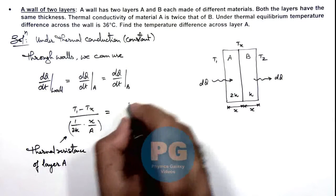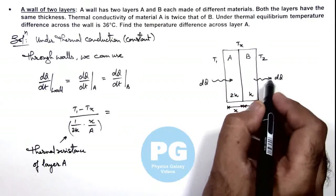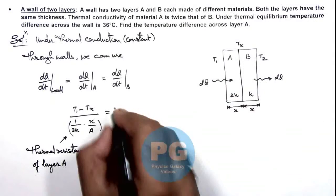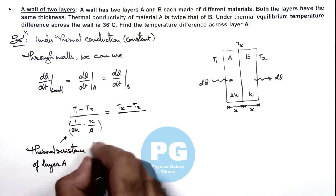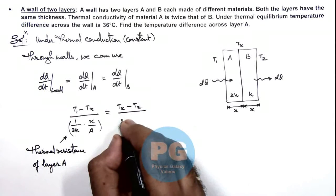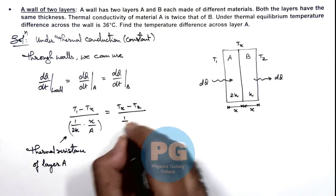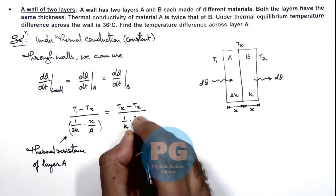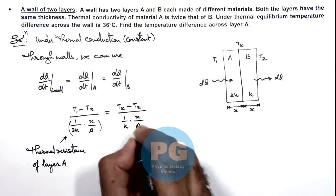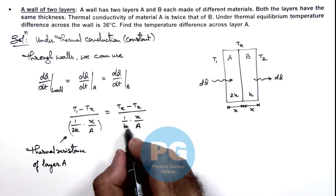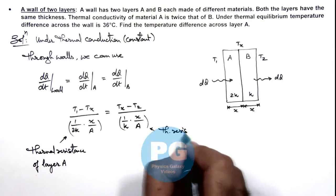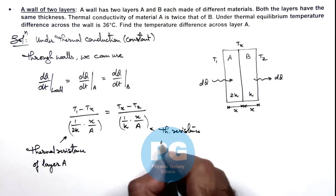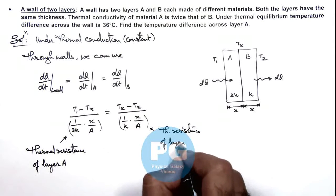Similarly, we can write the amount of heat conducted per second through layer B as Tx minus T2 divided by the thermal resistance of layer B, which can be written as 1 over k times x over A. This is the thermal resistance of layer B.